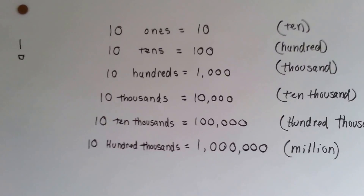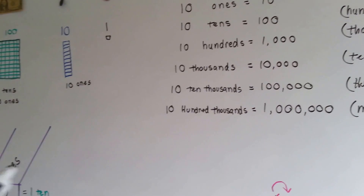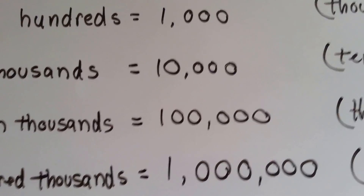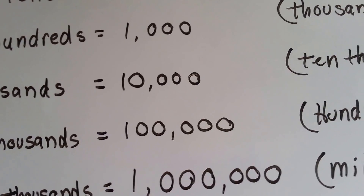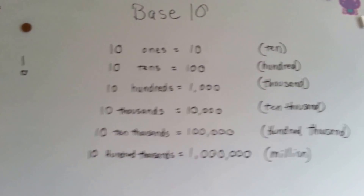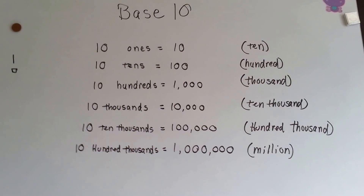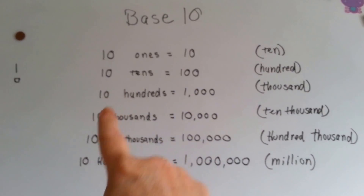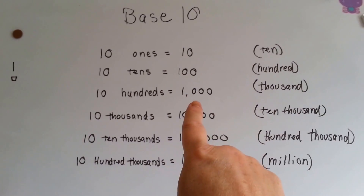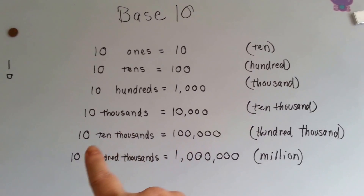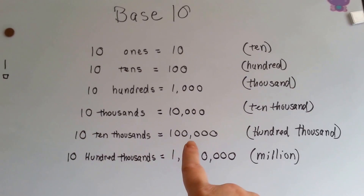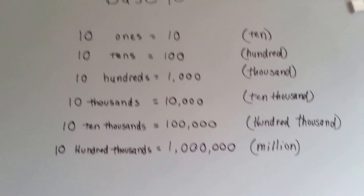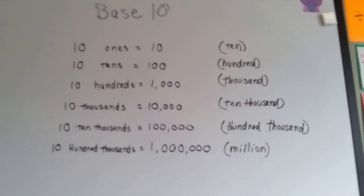Our number system, our place values, are called base ten. Base ten means that everything is based off of ten. When you have ten ones, you have a ten. When you have ten tens, you get a hundred. When you have ten hundreds, you get a thousand. When you have ten thousands, you get ten thousand. When you have ten ten thousands, you get a hundred thousand. When you have ten hundred thousands, you get a million. And it goes on and on for infinity, as long as you can name the next place value.